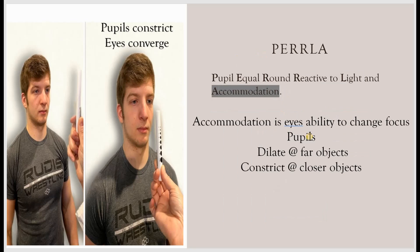Next is accommodation. Accommodation is the eye's ability to change focus — that is, the ability to look at far objects and close objects. When you look at far objects the pupils dilate, and when you look at closer objects the pupils constrict.